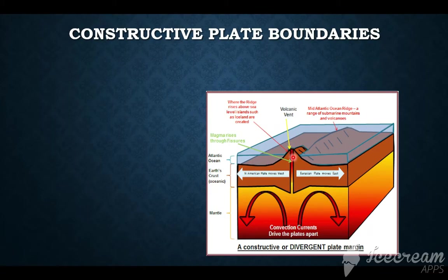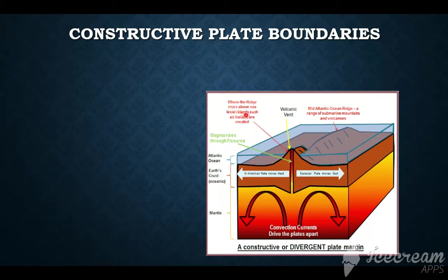In the process, the magma that escapes will cool down and in some instances form ridges. Sometimes the ridge might rise above the sea level, and we may end up having an island arc as a result. One good example is Hawaii, an example of an island arc created by diverging tectonic plates.